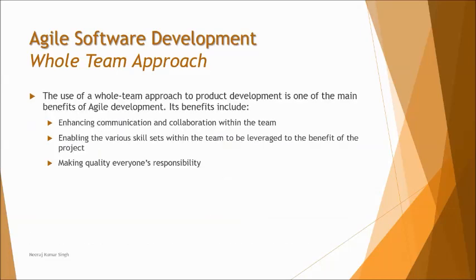Now we talk about the standard benefits of having the whole team approach. By implementing these practices in Agile — which could not be done in traditional approaches — many barriers are overcome, and that is why Agile is called a fast-track development process.